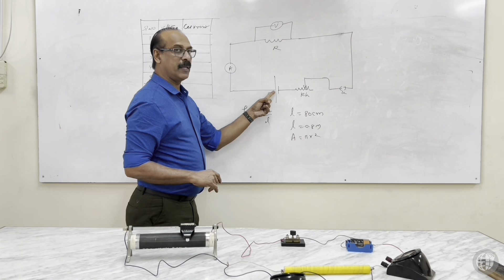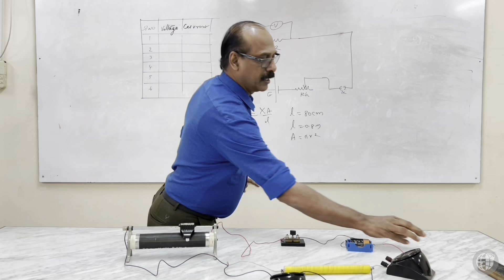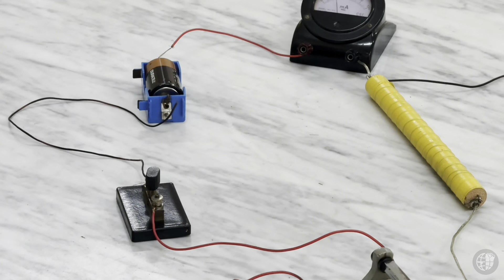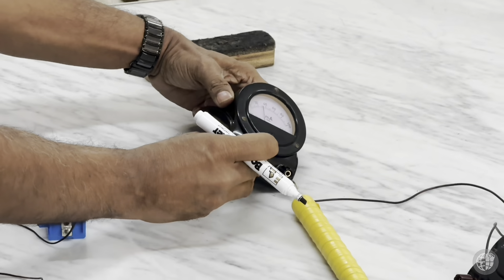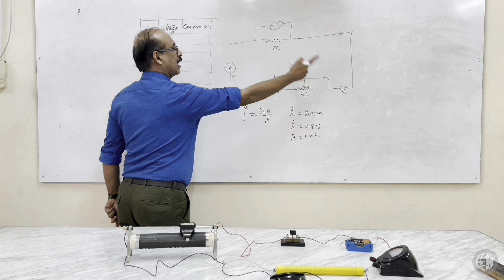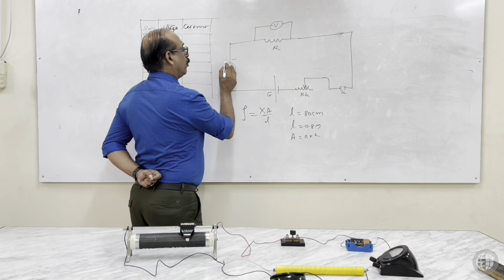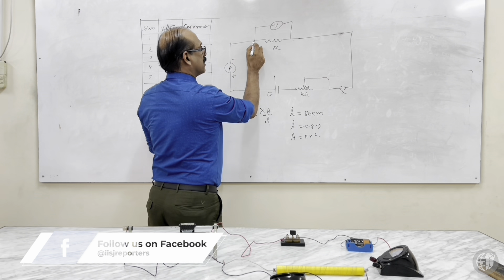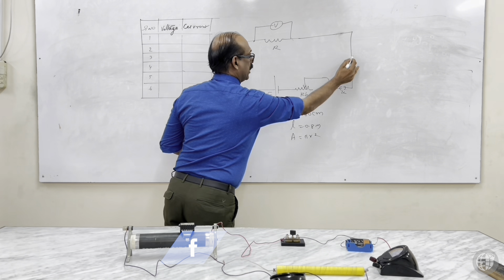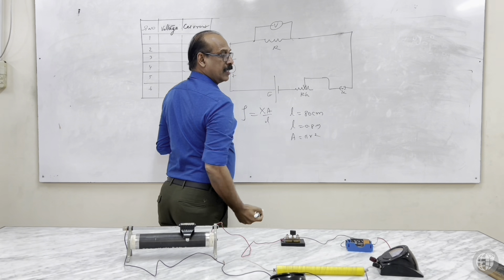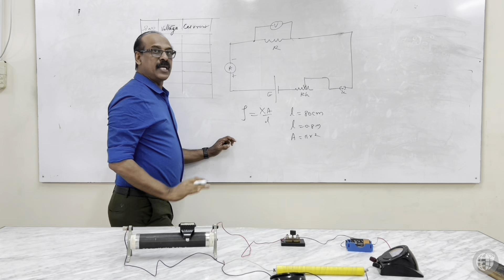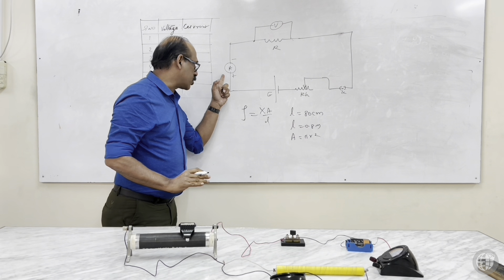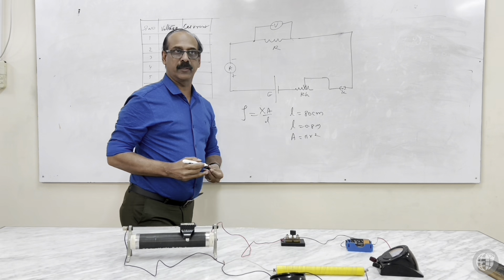The positive terminal of the cell connects to the positive of the milliammeter — you can see the red terminal. The negative of the cell should come to negative. The other end goes to the unknown resistance, then to a key, then through the rheostat, and back. Make sure the milliammeter is working and the series connection is correct.